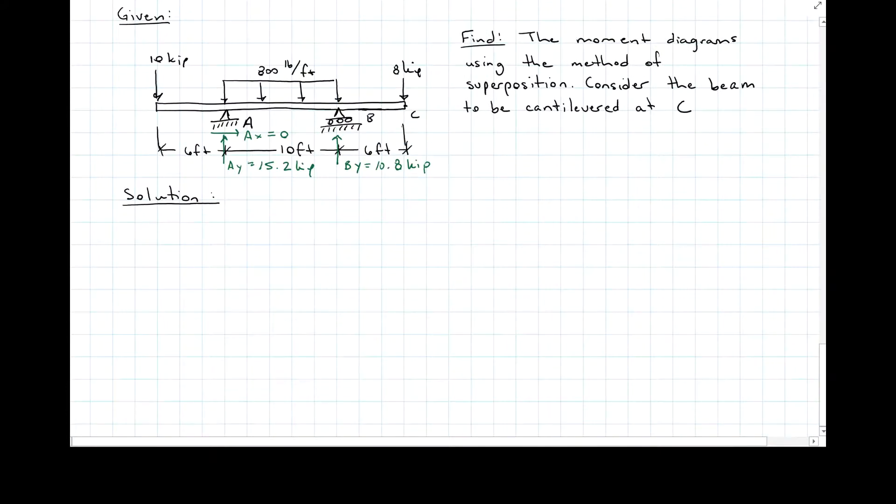Here we have another beam that's supported with a pin at A and a roller at B. I want to find the moment diagram using superposition, and I'm going to cantilever it at C, all the way over here.